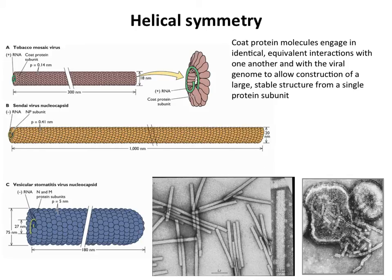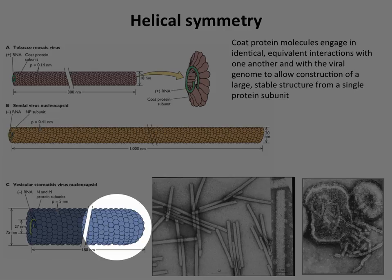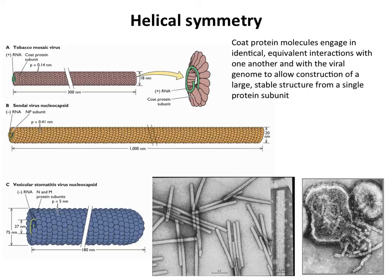This is the rabies virus relative vesicular stomatitis virus nucleocapsid — again, a single protein arranged in a helical fashion with the viral RNA inside. The animal viruses that have helical nucleocapsids are all enveloped, at least the ones we know of. So unlike TMV, these nucleocapsids are not naked in the environment — they would have an envelope around them.